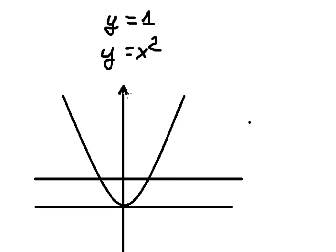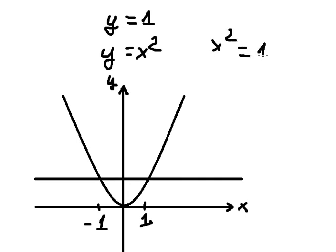Now when we compare the two graphs, y equals to x squared and y equals to 1, we need to find the intersection between x squared and 1. We can see that the intersections are at negative 1 and positive 1. To find this, we set x squared equals to 1, which gives us x equals to 1 and x equals to negative 1.